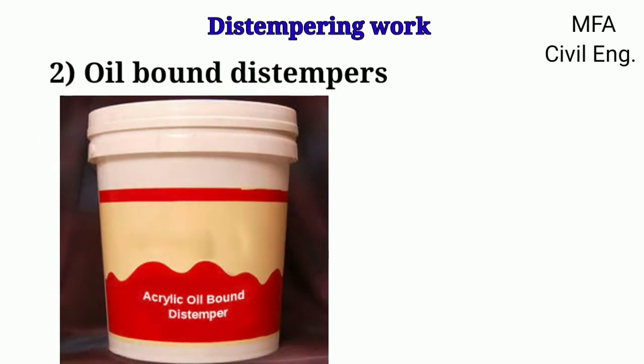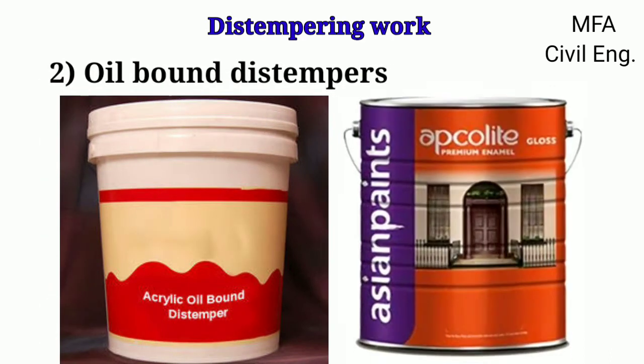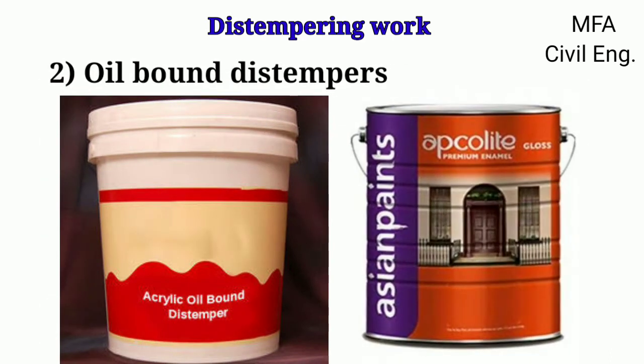Oil bond distemper is a variety of oil paint. In this type of paint, drying oil is treated in such a way that it can mix with water. Oil bond distemper is washable.